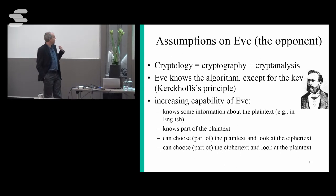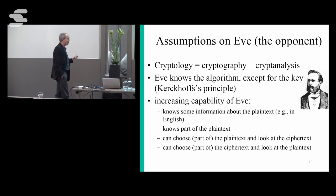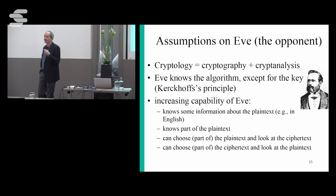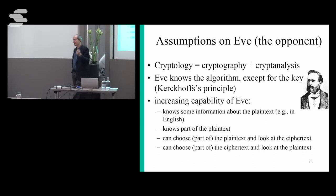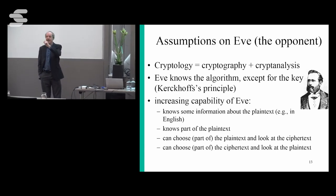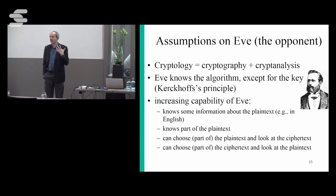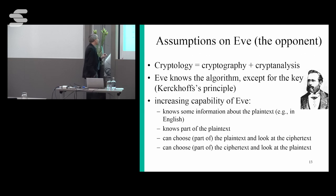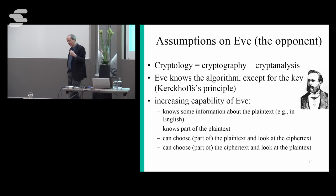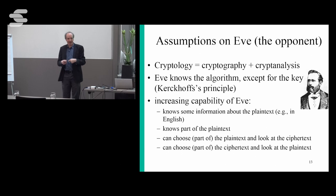We also assume that Eve knows some information on the plaintext. In the Caesar cipher example, you found the plaintext because it was English. If the plaintext had been random you would never have found it, but in general plaintext is redundant and written in a language. Very often part of the plaintext is known — military messages start with 'top secret,' and Snowden documents start with 'TS' plus abbreviations. If you take a Microsoft Word document, it starts with a very redundant 8-kilobyte header. Modern cryptosystems are designed to resist much more powerful attackers, like attackers who can choose part of the plaintext and look at the ciphertext — you even give Eve control on the plaintext and let her play with the crypto box.